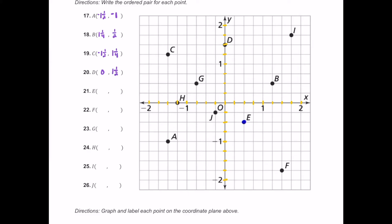For E, it's down here in quadrant four. It looks like we're moving positive one half to the right, and then moving down half — so that's negative one half. So the ordered pair is one half comma negative one half.